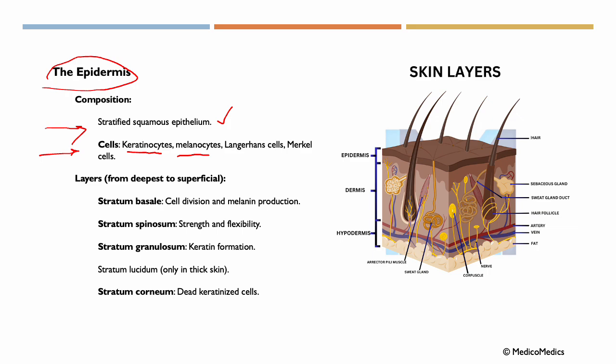Then we have the Langerhans cells. These are immune cells that help protect the skin by detecting and responding to pathogens. And then we have Merkel cells. These are sensory cells in the stratum basal that detect touch and relay signals to nerves.